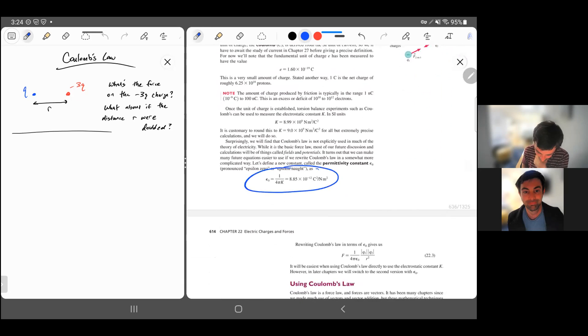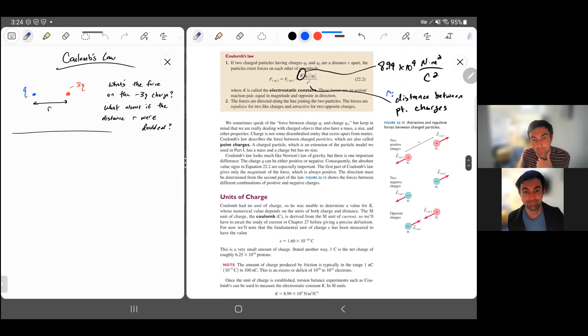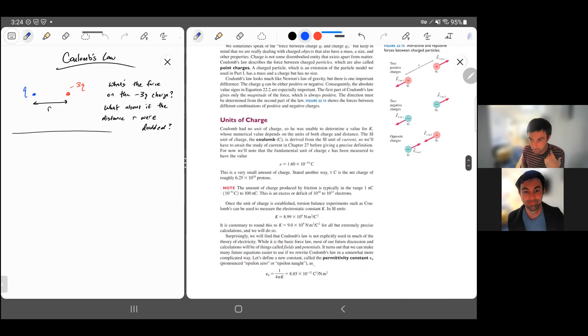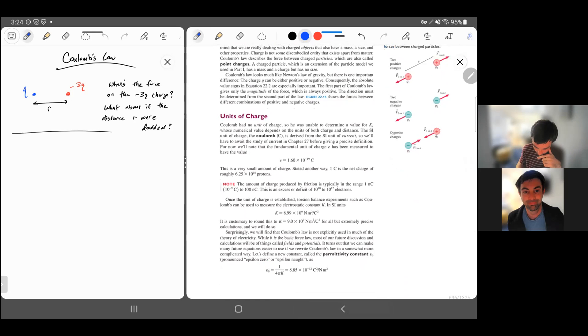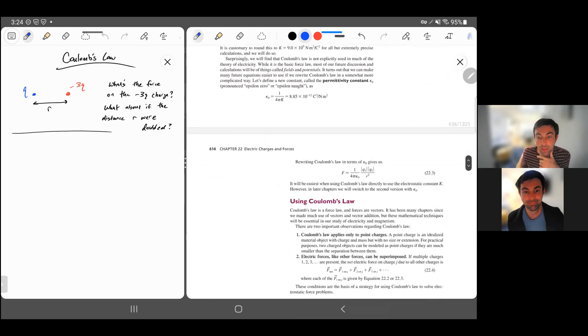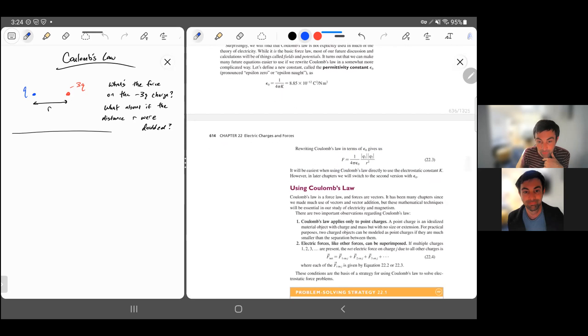We'll worry about this constant in a couple of lectures. This equation for Coulomb's law makes it easiest to make sense of with K. We're going to learn about another constant that makes most other equations simpler. Coulomb's law happens to be simpler with K, but most equations in electricity and magnetism are simpler in terms of this constant. When we need it, it's here. That's called the permittivity constant, and this is just rewriting Coulomb's law in terms of that permittivity constant.